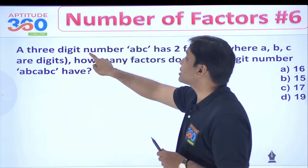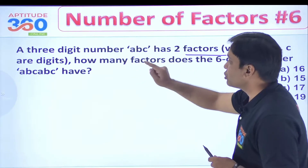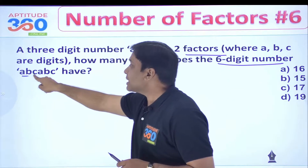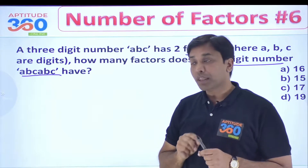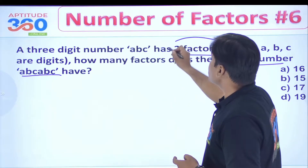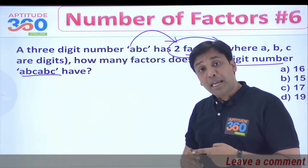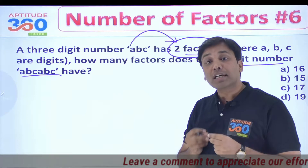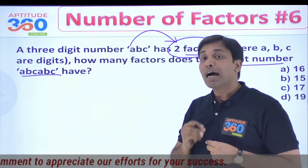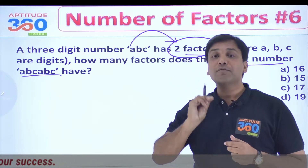Here is the question: a three-digit number ABC has two factors, where A, B, C are digits. How many factors does the six-digit number ABCABC have? The first thing you should recognize when reading this problem is that if ABC has exactly two factors, that means ABC is a prime number — a prime number has only two factors. This is something you will have to figure out on your own.